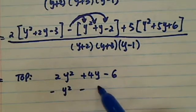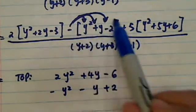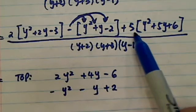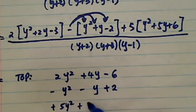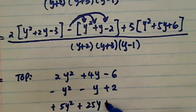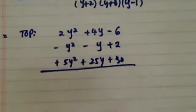So I have minus y squared, minus y, and then plus 2. Remember, I changed all the signs. Now over here on the last time, it's 5, so it's plus 5y squared plus 25y plus 30. Notice the way I'm doing it, instead of horizontally, the reason I'm doing that is to make it easier for myself to do the bookkeeping.